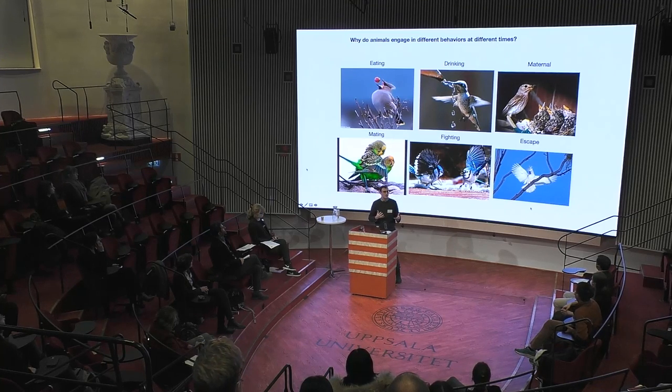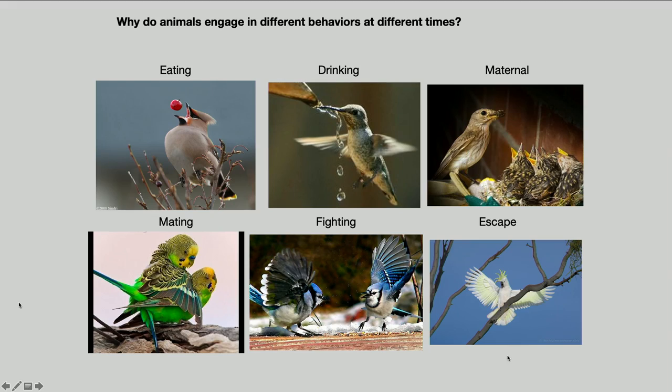In nature, animals and people do different things at different times. This is explained by variables in the brain called internal states, which cause them at certain times to eat food, drink water, parent their children, mate with other animals, or fight. Some of these are homeostatically regulated — eating and drinking are in response to a need for food or water. Others are in response to specific stimuli, like fighting when another animal is aggressive towards you, or escape when you see a threat.